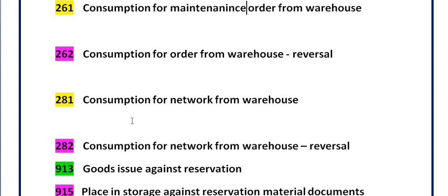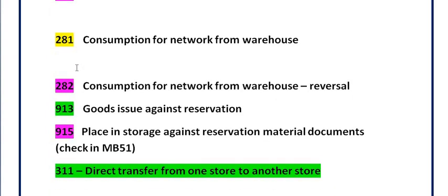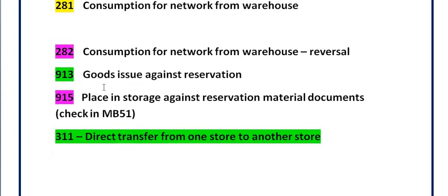Movement type 281 is consumption for the network/WBS from the warehouse. When you have planned inventory in WBS or R&D projects, the first step is to plan inventory from the warehouse to your projects and generate a reservation using movement type 415 for project stock. The second step is goods issue against the project stock reservation using movement type 281. Movement type 281 indicates that inventory has been successfully consumed and issued against the WBS. Movement type 282 is the reversal of 281.